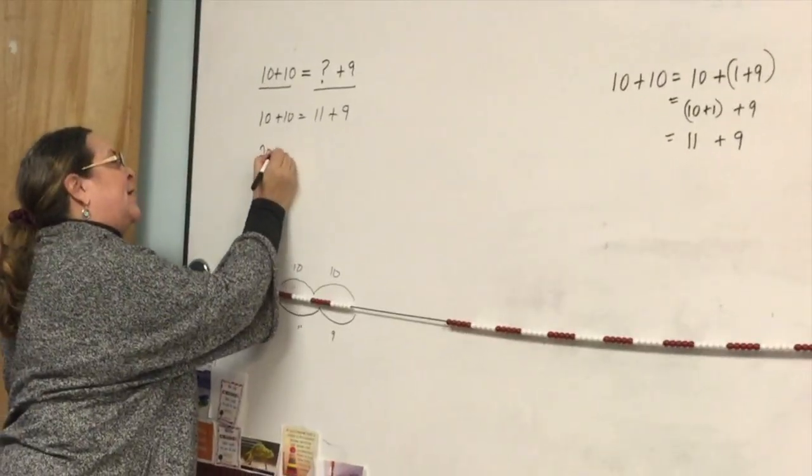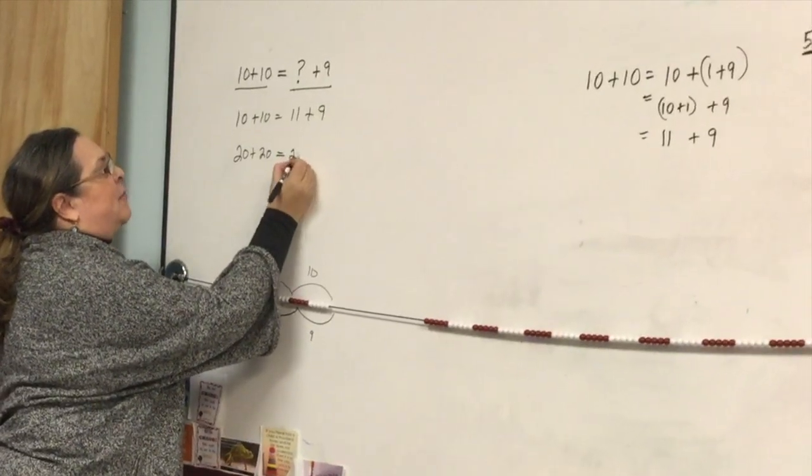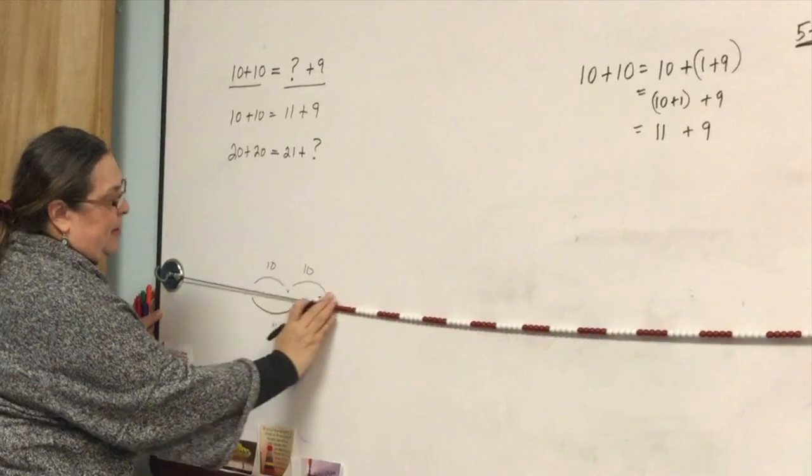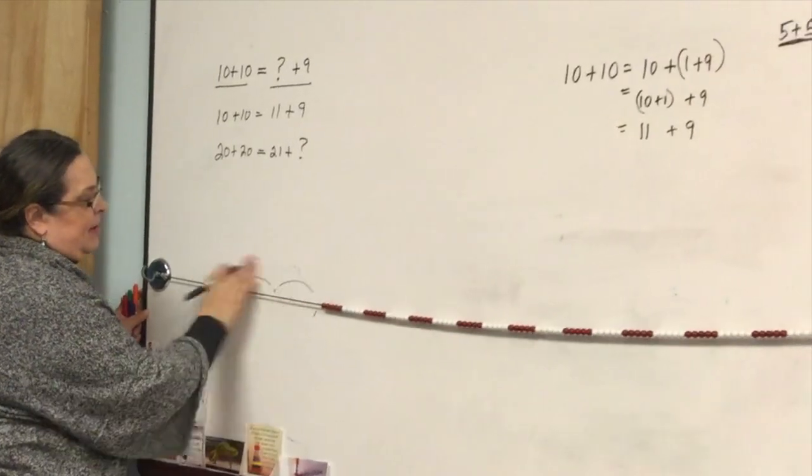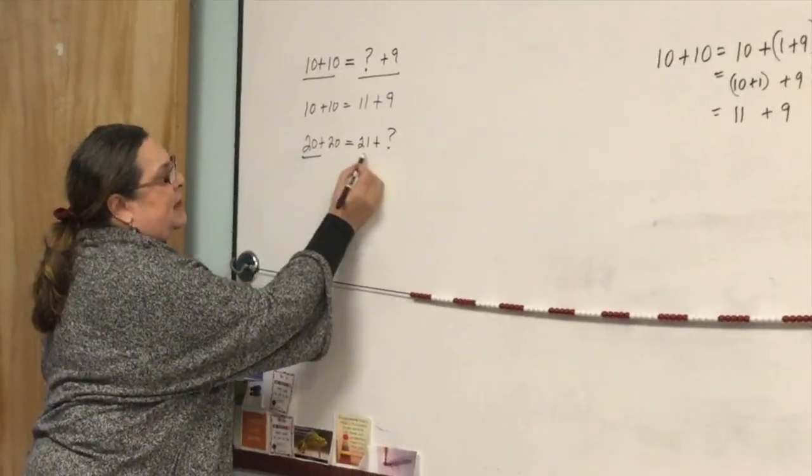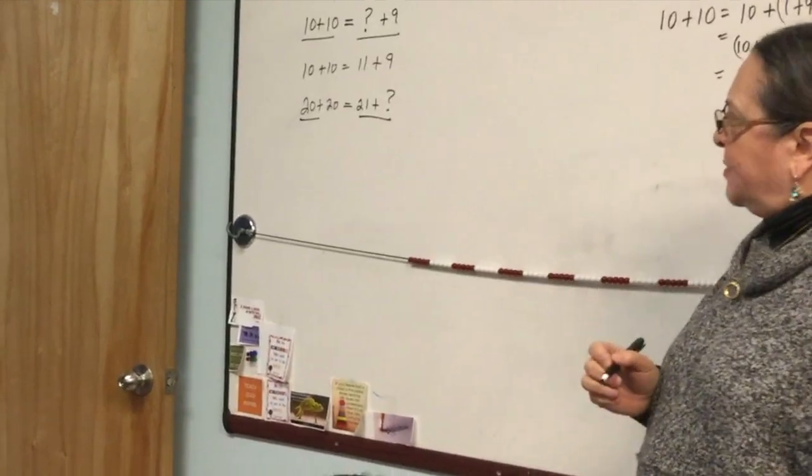So 20 plus 20 is our expression. It's going to be equivalent to 21 plus some unknown. It's going to be equivalent to another expression, and what would it be?